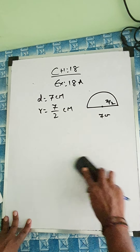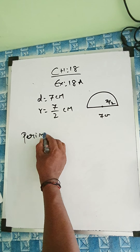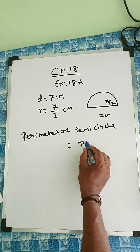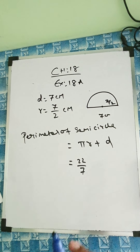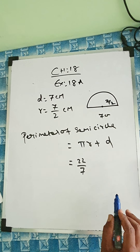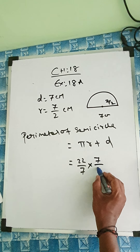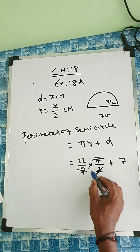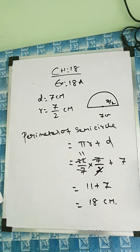We need to find the perimeter of the semicircle. The formula for perimeter of a semicircle is pi R plus D. Pi value is always 22 by 7 unless they give 3.14. So: 22 by 7 into 7 by 2, plus diameter 7. The 7s cancel, giving 11 plus 7, so the answer is 18 centimeters.